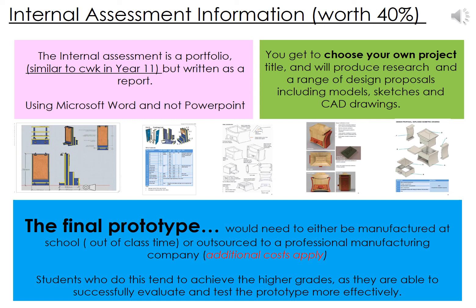The final prototype would either need to be manufactured at school outside of class time, or outsourced to a professional manufacturing company, which would involve additional costs. The reason for this is that you are not assessed on the final product within your coursework — unlike GCSE where a whole section is dedicated to it. At IB level you are not marked on the final prototype at all, and students often find they don't have enough time to complete it. So a number of students get their product outsourced or made by another company, so they can use it for sections D, E and F of their internal assessment.